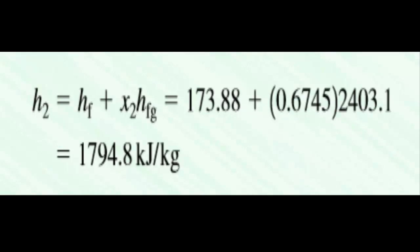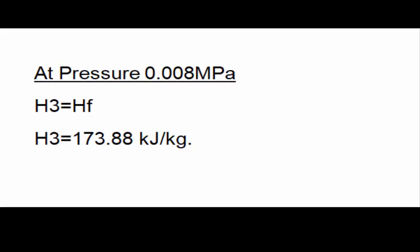Now we calculate the enthalpy at stage 3, which is the outlet of the condenser. At the outlet of the condenser there is only water, so we again go to the table A-2 and we see the value of Hf at 0.008 megapascal, and it came out as H3 = 173.80 kilojoules per kilogram.